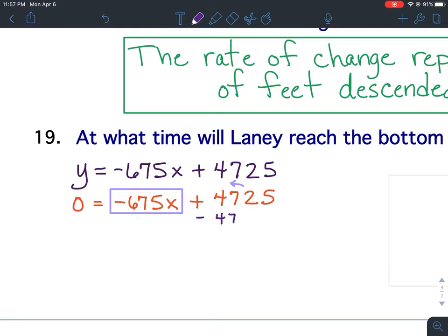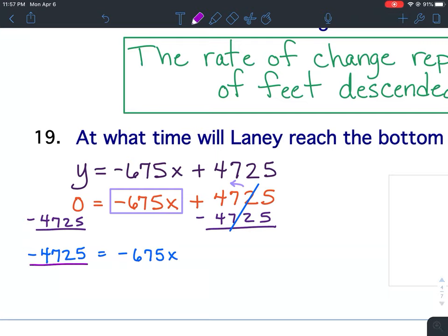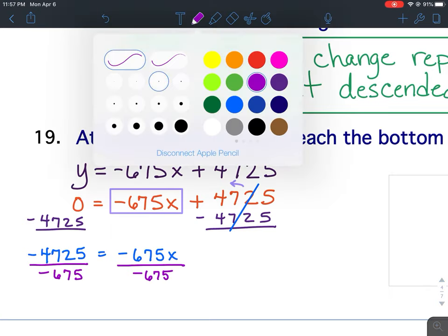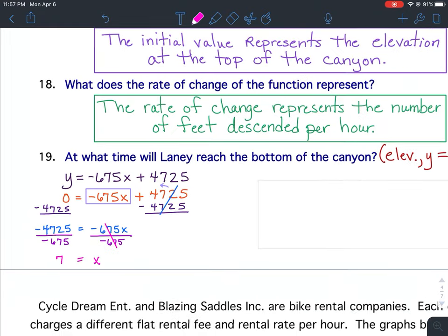So I'm going to subtract 4,725 from both sides. So I'll have negative 4,725 equals negative 675x. I want to isolate the variable, so I'm going to divide both sides by negative 675. So you divide that out, you get 7 equals x. So at what time will Laney reach the bottom of the canyon? Laney will reach the bottom of the canyon in 7 hours.